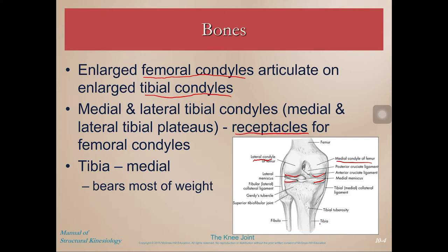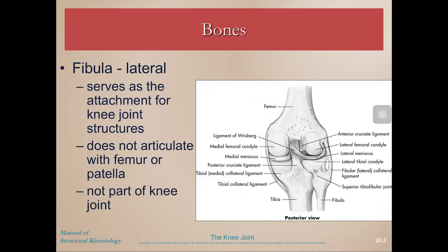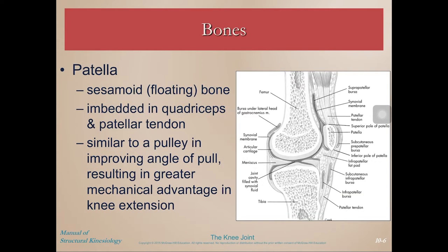The tibia, the larger bone, bears most of the weight, and the fibula is mostly an attachment for lower leg musculature. The head of the fibula is very prominent on the side — you can palpate that on yourself. It serves as an attachment point for knee joint structures but doesn't actually articulate with the femur at all, so it's technically not part of the knee joint. Then we have the patella, the sesamoid or floating bone.